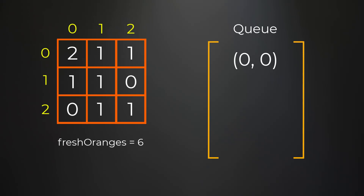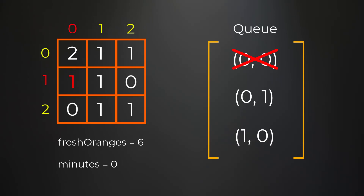Now we start our BFS. In the first iteration we pull from our queue a single time because we only have one element. We initialize a variable called minutes to keep track of how many iterations have passed — this is what we'll eventually return. We pop from the queue and check all neighbors. We add the right and down neighbors because those have fresh oranges (value of one). After adding those positions to the queue we change those fresh oranges to rotten, and decrease our fresh orange count from six to four.